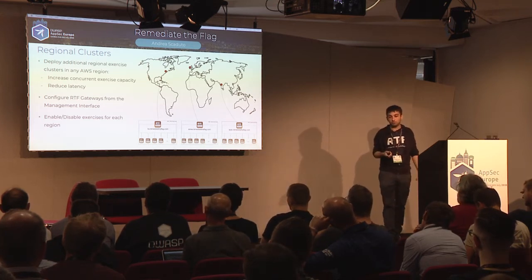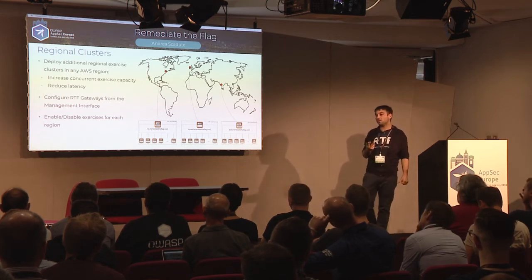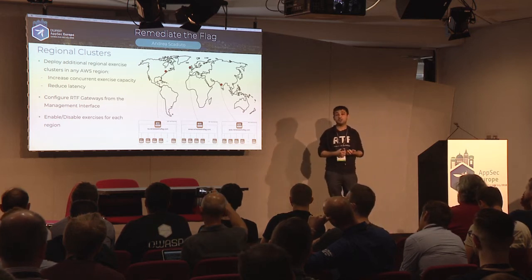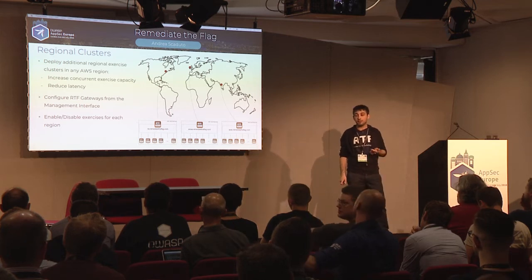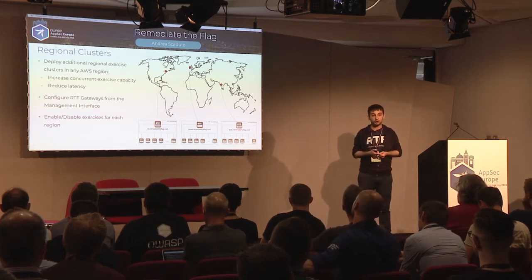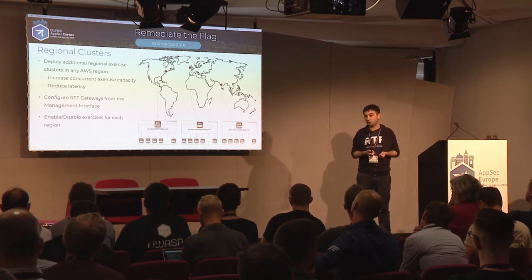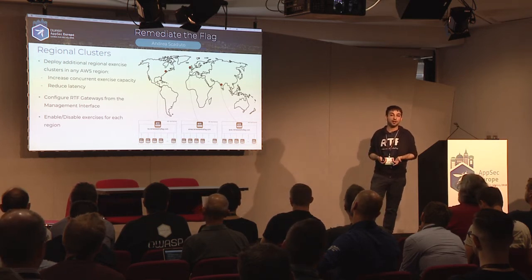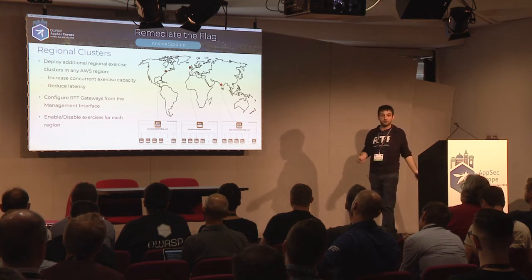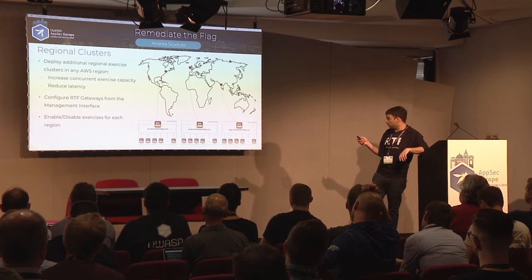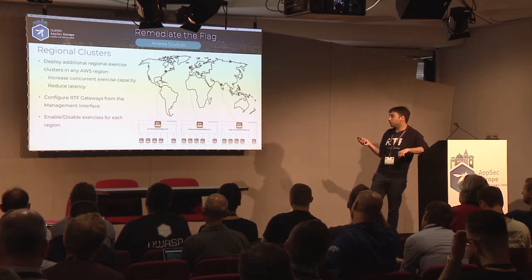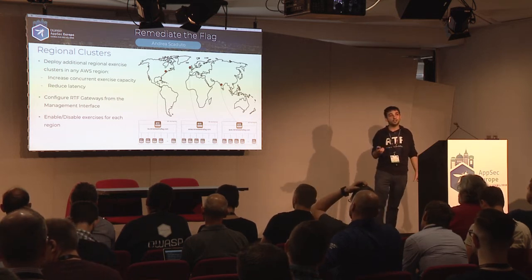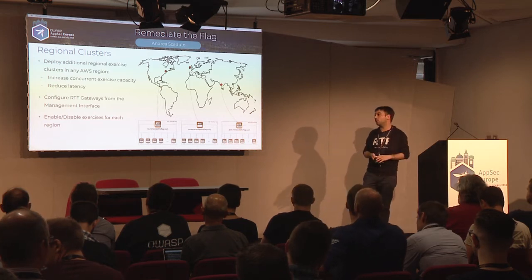Together with the main deployment you get one RTF exercise cluster and one RTF gateway, but you can deploy more. This is twofold: first, it increases the number of concurrent exercises; second, it reduces latency, since we're talking about an RDP connection rendered in the browser and a geographically distant server causes a poor experience. After deploying a new gateway, it needs to be onboarded in the management interface. You can also enable or disable exercises per region.